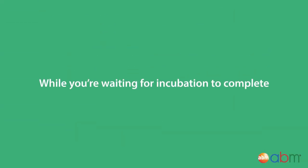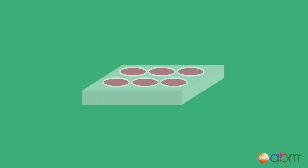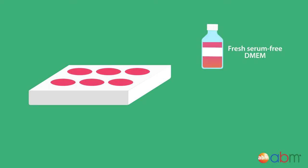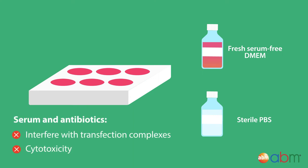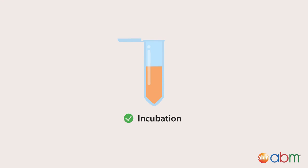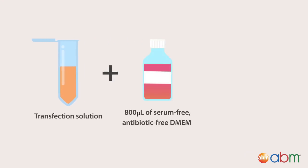While you're waiting for incubation to complete, aspirate the old growth media from the 6-well plates and gently wash the cells with fresh serum-free DMEM or sterile PBS to remove any serum and antibiotics that could interfere with the formation of transfection complexes and increase cytotoxicity. Once incubation is complete, add 800 microliters of serum-free, antibiotic-free DMEM to the transfection solution.